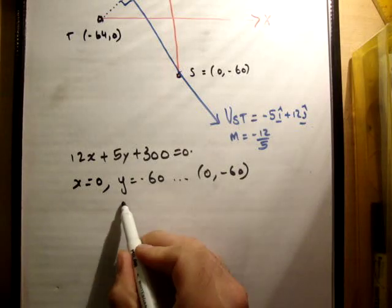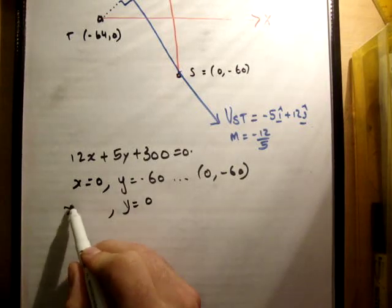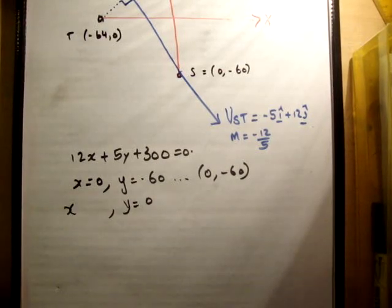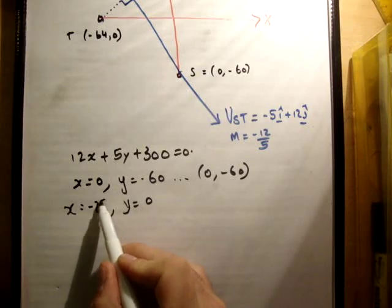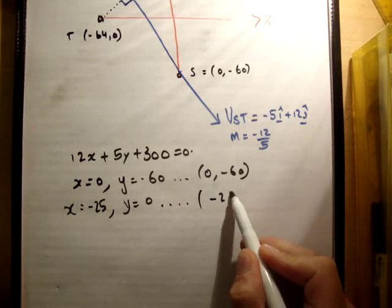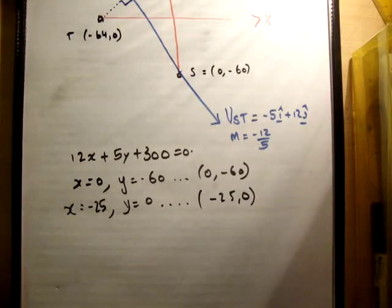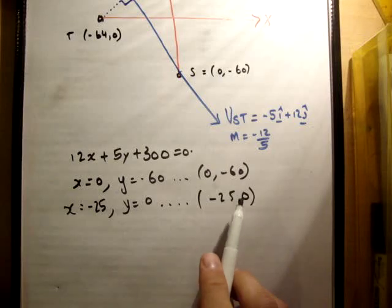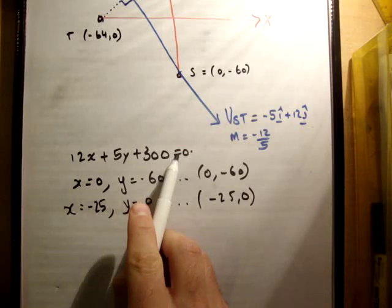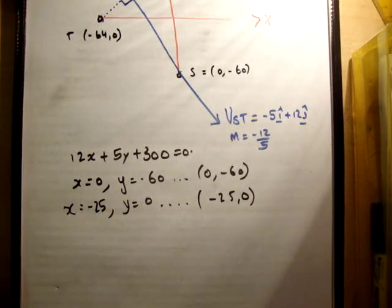And what if this time we set y equal to 0? Therefore, x becomes -300/12, which is -25. So another point which is on that line is (-25, 0). Now let's prove that these points are on that line. If I put these points into this equation, I'll get 0. And if I get 0, then they are on the line.